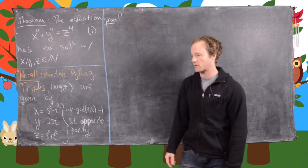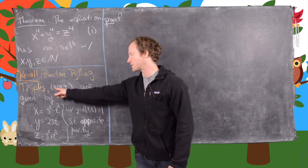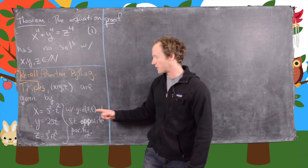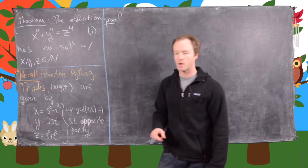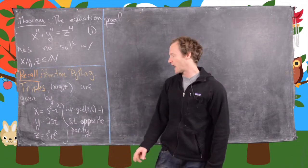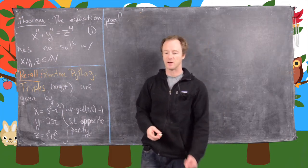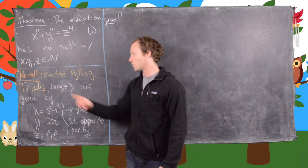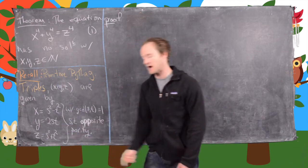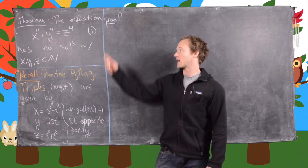Let's recall the notion of a primitive Pythagorean triple, as we'll need it in the proof. A primitive Pythagorean triple is a triple x, y, z where the GCD of the triple is 1, given by the parameterization: x is s squared minus t squared, y is 2st, and z is s squared plus t squared, where the GCD of s and t is 1 and they have opposite parity — one is even and one is odd. Generally we take y to be even, as in this parameterization. I have a video on primitive Pythagorean triples if you want more detail.